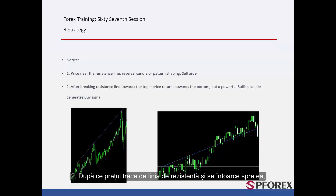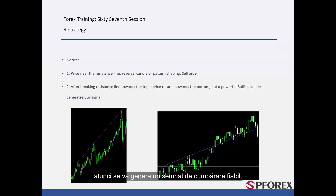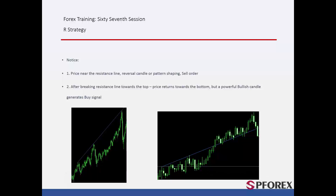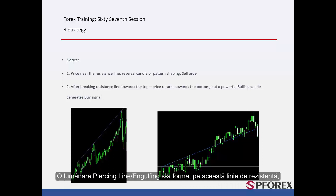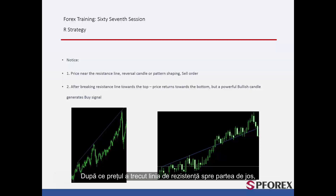After price passes the resistance line and returns towards it, if a powerful bullish candle forms on the resistance line, then a reliable buy signal will be generated. On the right graph, market price has passed the resistance line. Market price could not pass this line towards the bottom after the price had returned towards it. A piercing line or engulfing candle has formed on this resistance line; thus a trader could place a buy order. After price crossed the resistance line towards the bottom, a trader could place a sell order lower than the bearish candle.